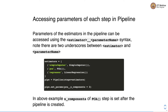Sometimes we need to access parameters of each step in the pipeline. These parameters can be accessed using the name of the estimator followed by double underscore and the name of the parameter. For example, to set the n_components parameter of the PCA step, we refer to it as pca__n_components. So we use the estimator name, double underscore, and parameter name — here pca__n_components — and set it to 2.